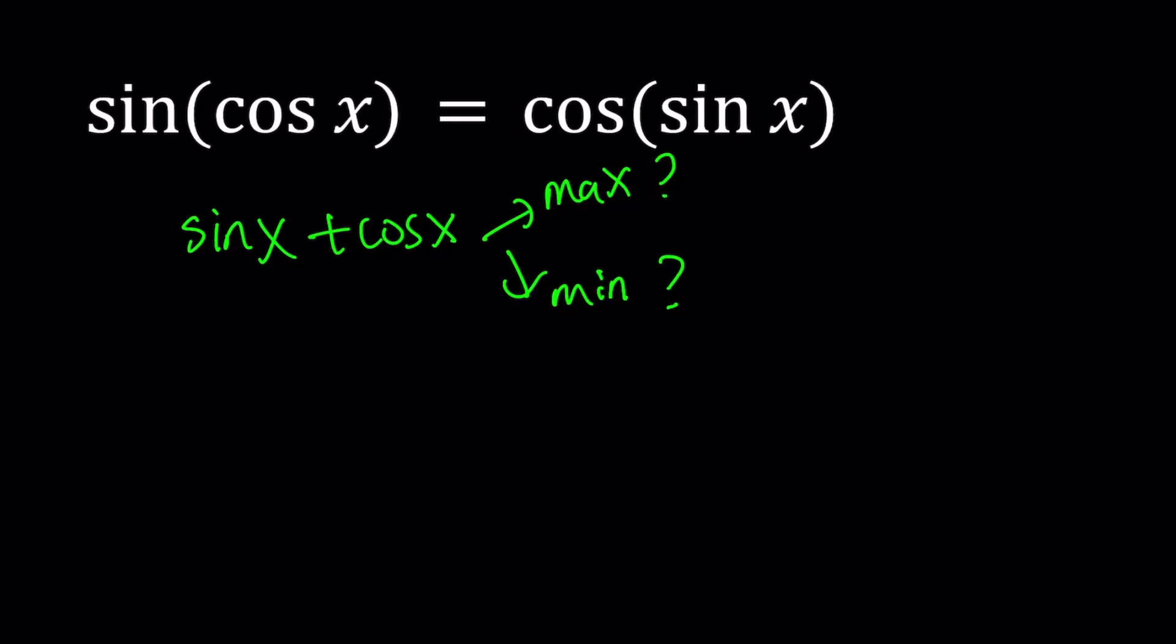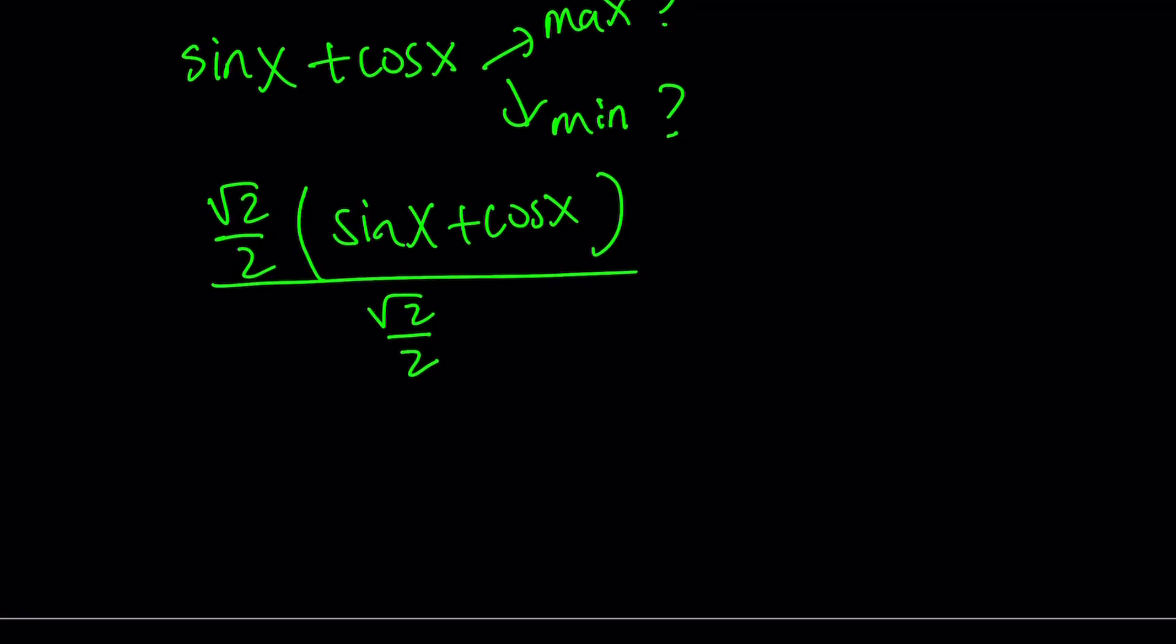I'm going to multiply this by something and then divide by the same thing. Let's go ahead and multiply this expression by root 2 over 2, which should be familiar to you if you are doing trigonometry. And I want to divide by the same quantity so that it's balanced.